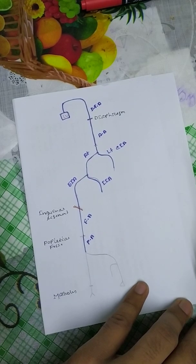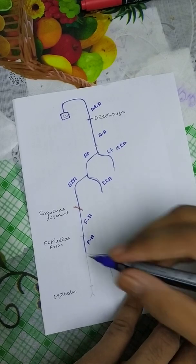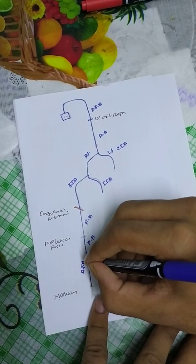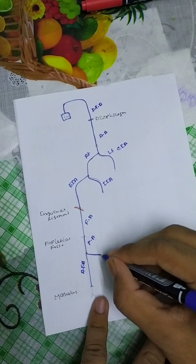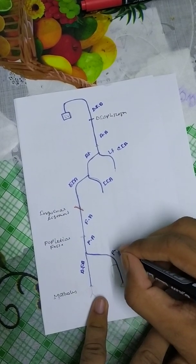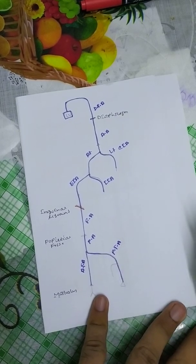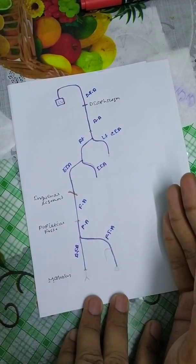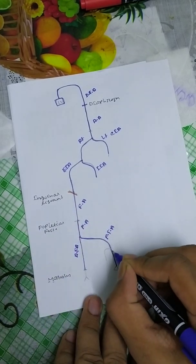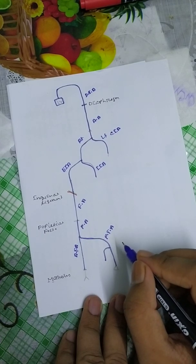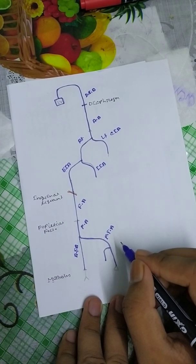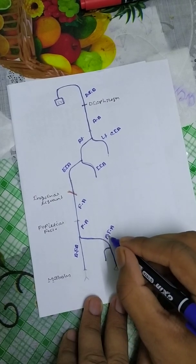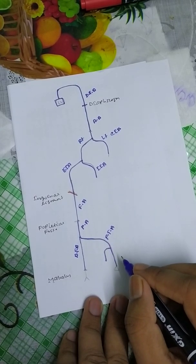The femoral artery branches into the anterior tibial artery, posterior tibial artery, and the fibular artery. The posterior tibial artery is medial, and then we have the fibular artery.